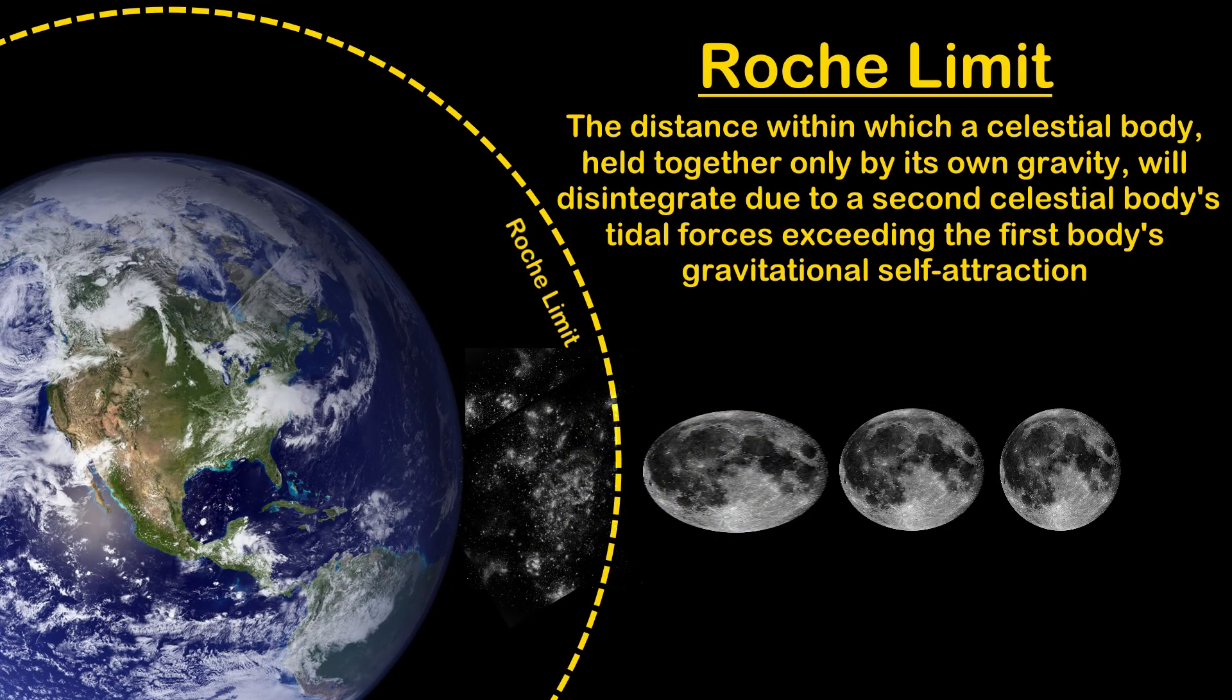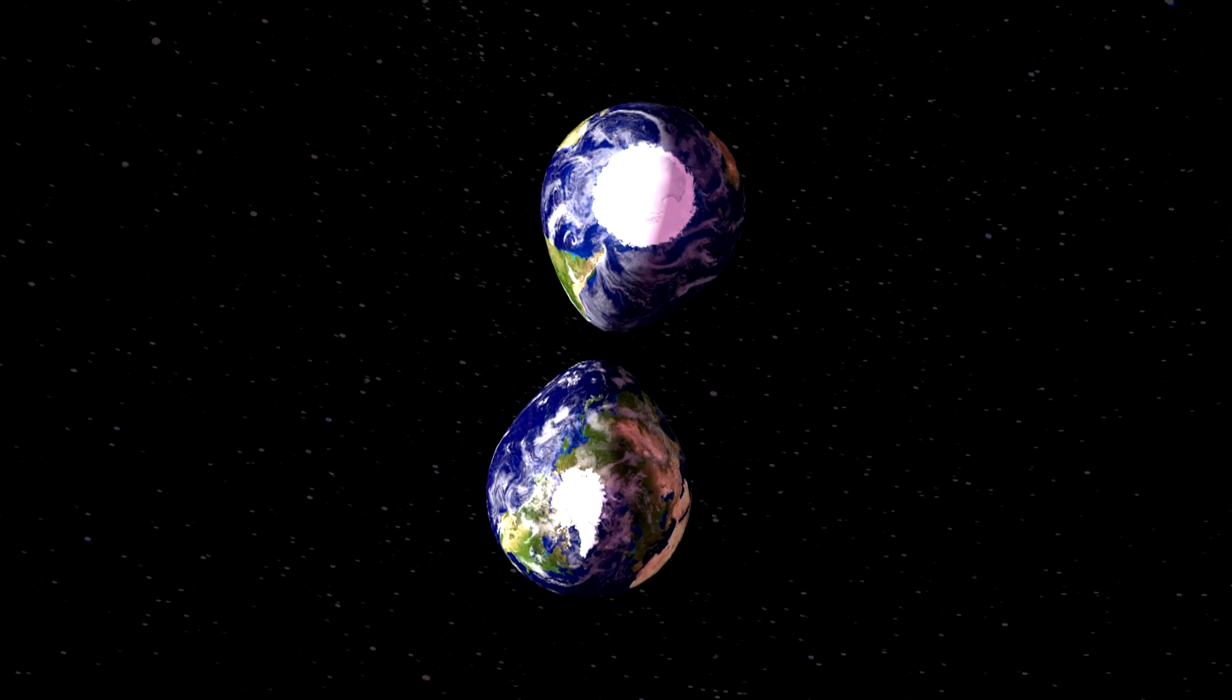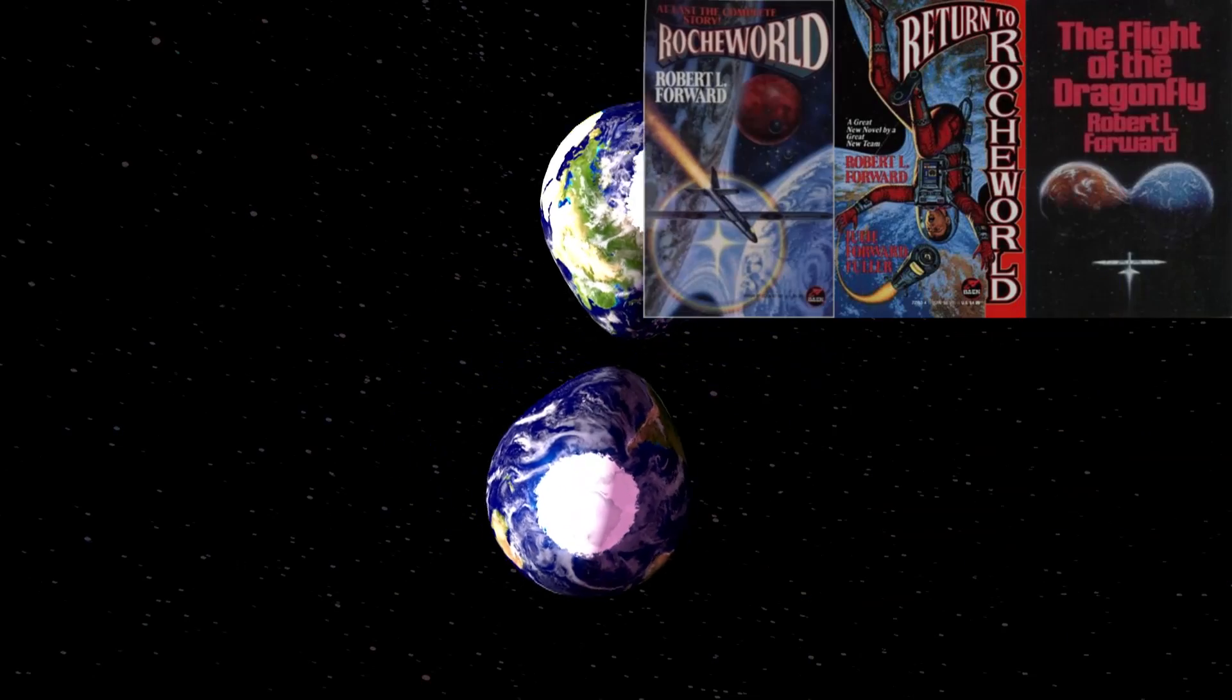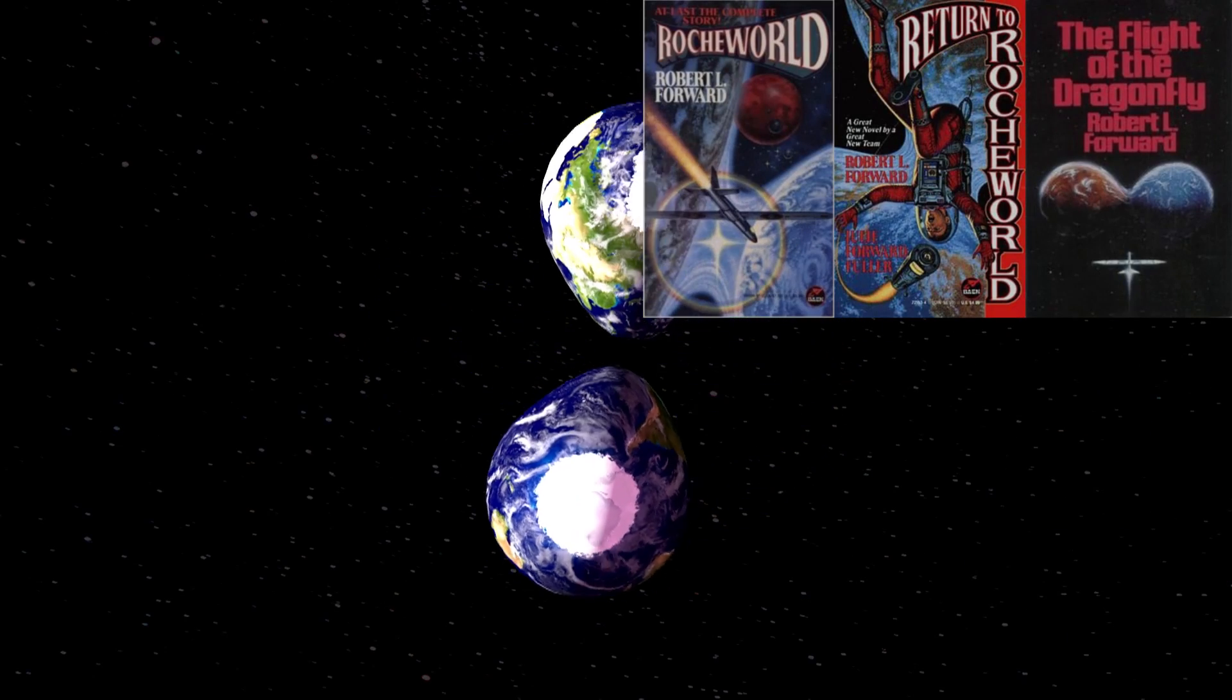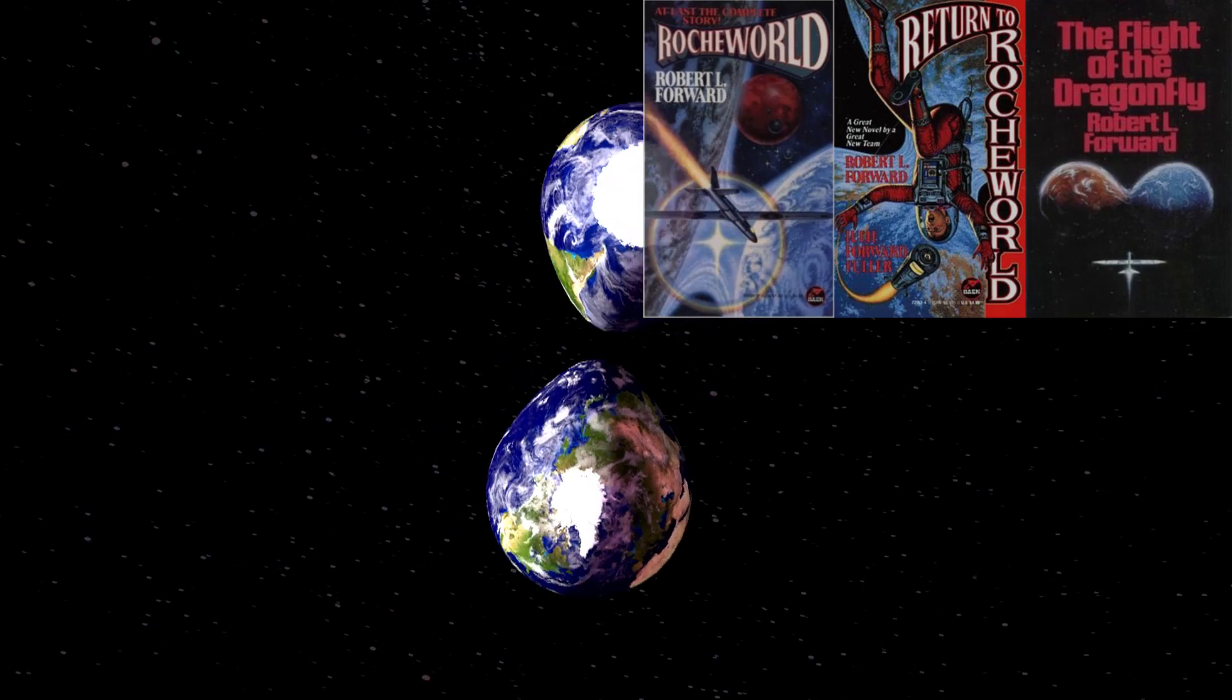Even our Moon, if brought close enough to Earth, would have to be within 6,000 miles, which would be skimming distance since the Earth is 4,000 miles in radius and the Moon 1,000, so they only have 1,000 miles of separation from closest points. For our double planet the two can flat out overlap, and Robert L. Ford played with this idea in his novel Roche World.